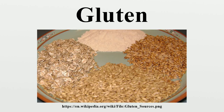Gluten is the composite of two storage proteins, gliadin and glutenin, and is conjoined with starch in the endosperm of various grass-related grains. Worldwide, gluten is a source of protein, both in foods prepared directly from sources containing it and as an additive to foods otherwise low in protein. It is appreciated for its viscoelastic properties.